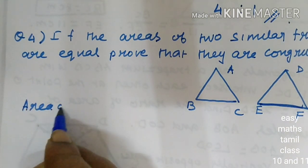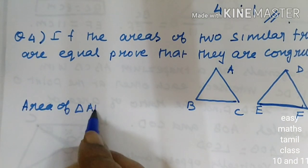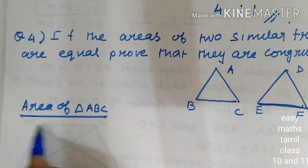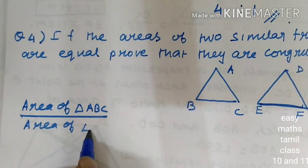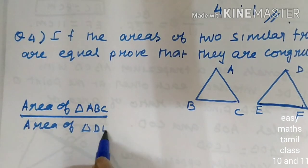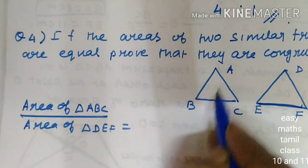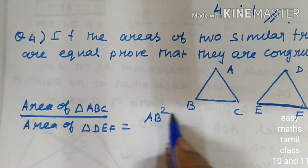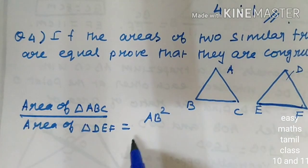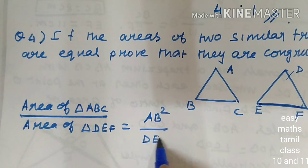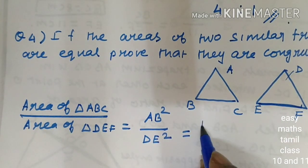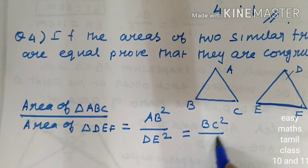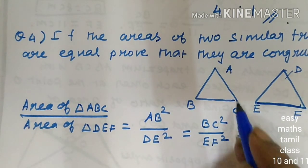Area of triangle ABC divided by area of triangle DEF is equal to AB over corresponding side DE, BC over corresponding side EF, and AC over corresponding side DF.